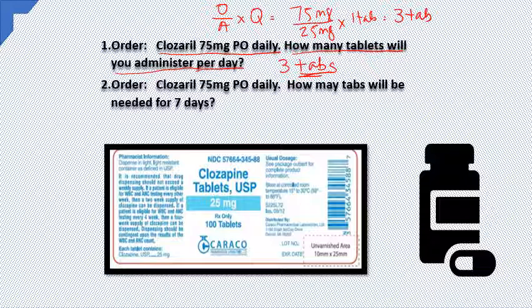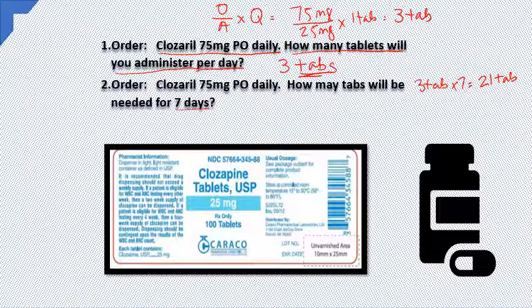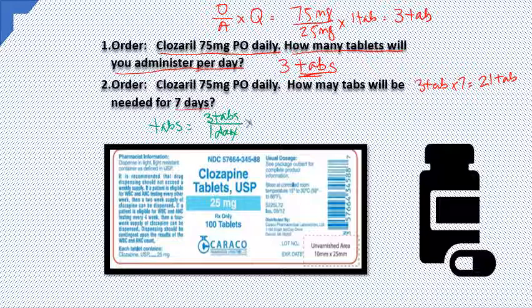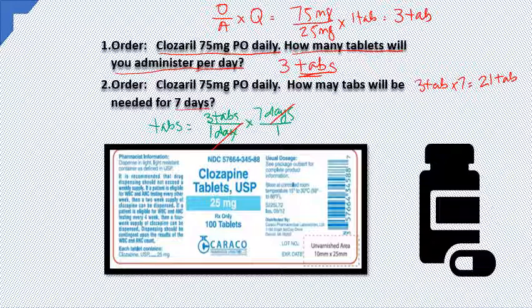The next question: same Closarol 75 mg PO daily — how many tablets will you need for 7 days? Since you give 3 tablets per day, multiply by 7 to get 21 tablets. For dimensional analysis: solving for tabs, write 3 tabs per day, multiplied by 7 days over 1. Multiply the top: 21. Multiply the bottom: 1. Answer is 21 tablets.